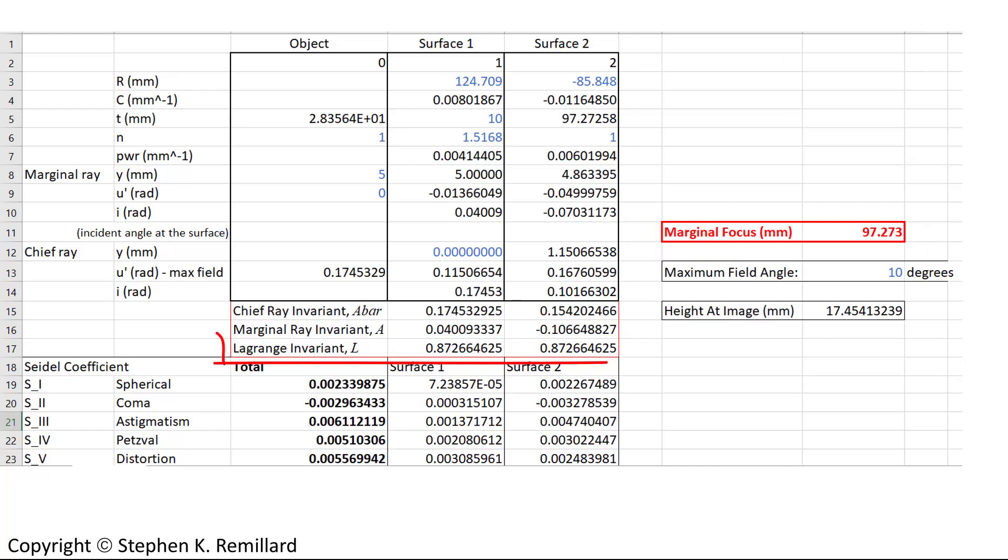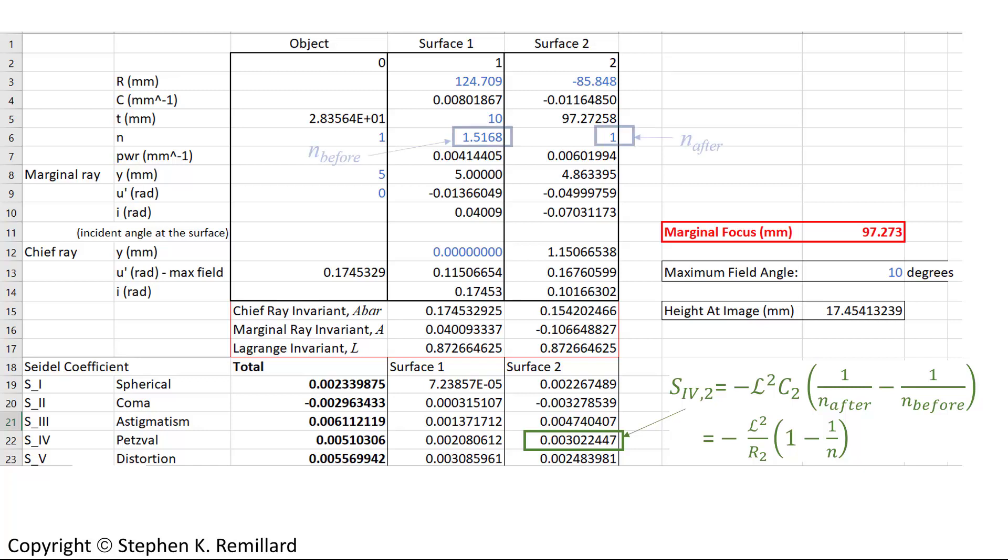Fortunately, the Lagrange invariant is the same at both the front surface and the back surface of the lens. And the Seidel aberration coefficient for field curvature is calculated from the givens above and the Lagrange invariants, resulting in 0.003 mm at surface 2, 0.002 mm at surface 1, for a total of the sum of the two, 0.005 mm. For the case of calculating the Seidel coefficient for surface 2, the after index is 1, because it's air again, and the before index is glass.